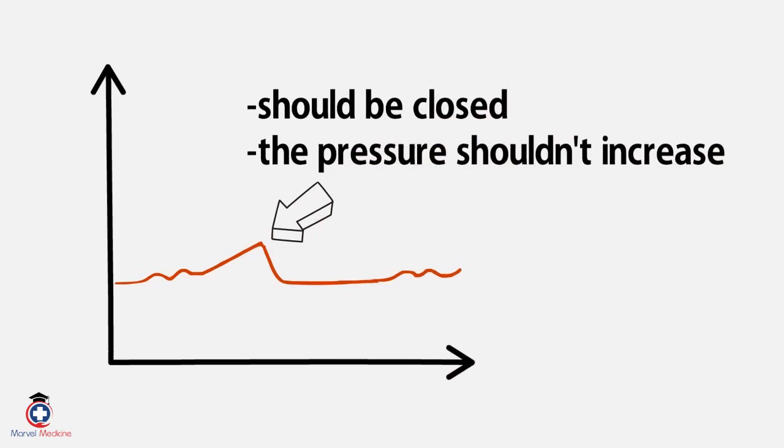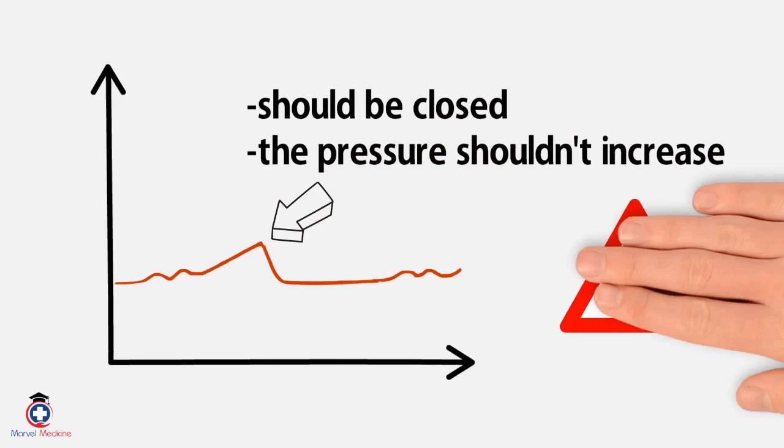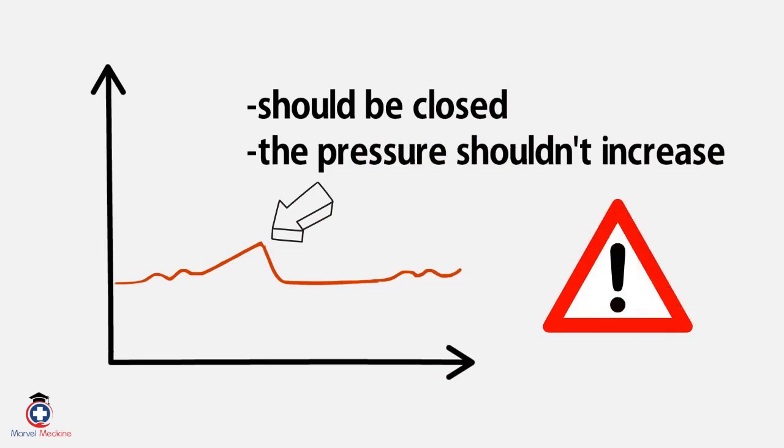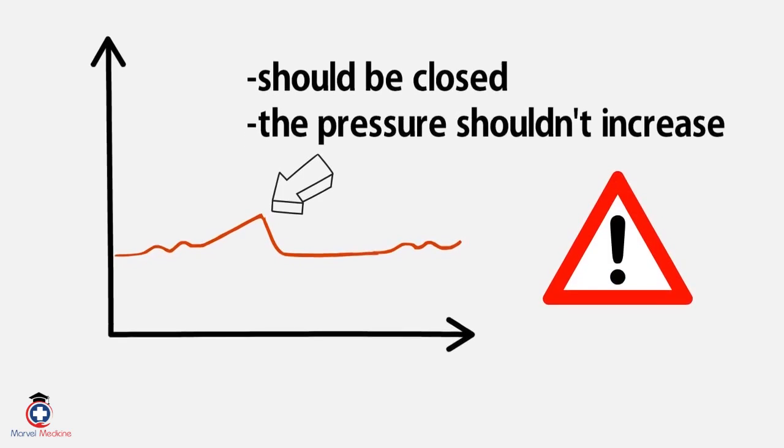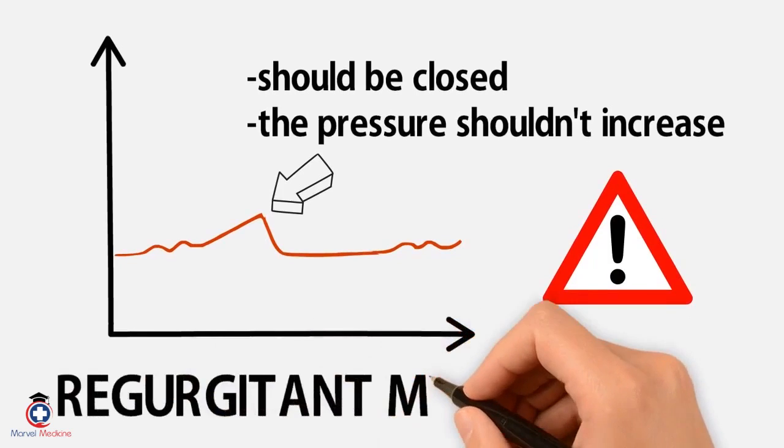But this one is going up. What does that mean? That means that something is happening causing the pressure to go up in the left atrium. A regurgitant mitral valve.